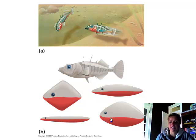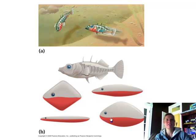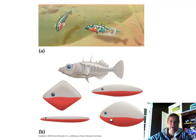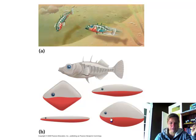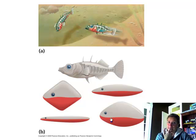A key feature of a fixed action pattern is that if the behavior gets interrupted, the animal will restart and complete the entire behavior anyway. For example, my Alaskan Malamute Ella would do exactly three circles before lying down on her bed every night. If you interrupted her, she'd have to start her three circles over. It turns out that's an old evolutionary trait of matting down grass where they would be lying.